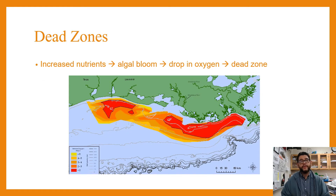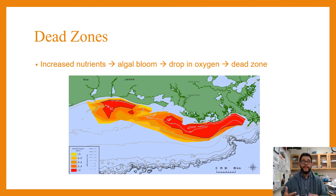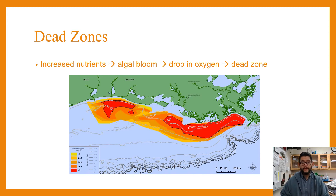Another example is dead zones. Dead zones are where you have nutrients coming in in large quantities, which causes an algal bloom, and that leads to an eventual drop in oxygen, resulting in a dead zone. A classic case of this is the Gulf of Mexico, where there is a massive dead zone because of all the nutrients coming in from the Mississippi River.